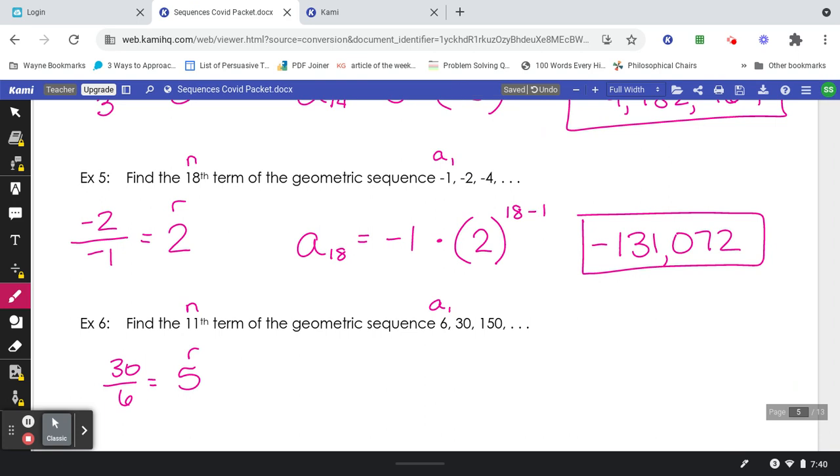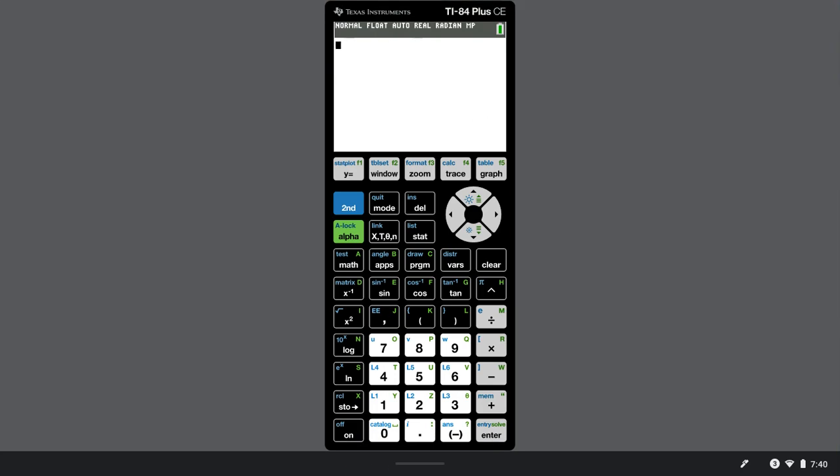This would be a good time to pause the video. See if you can type that into your calculator and get the answer and then turn the video back to play. Hopefully you got a chance to try that. A sub 11 equals 6 times 5 to the 11 minus 1. 6 times 5 to the 11 minus 1, just like that.